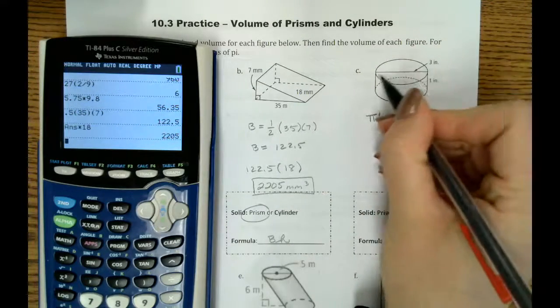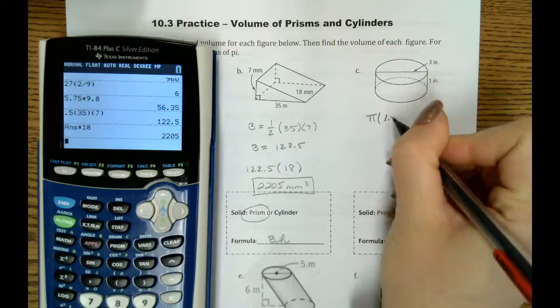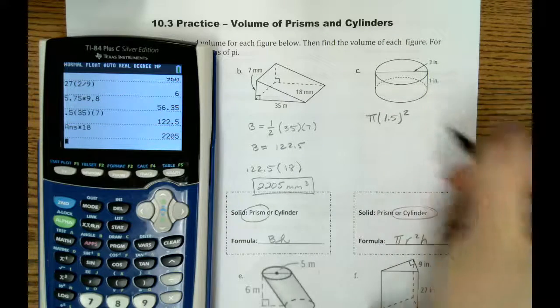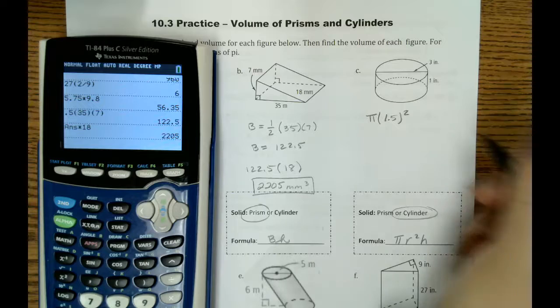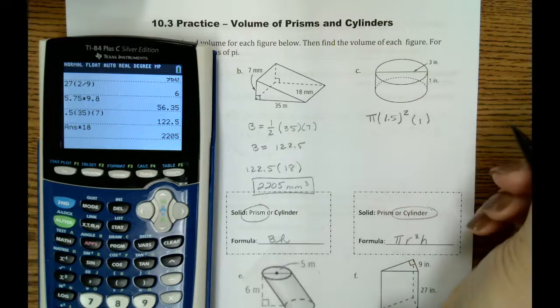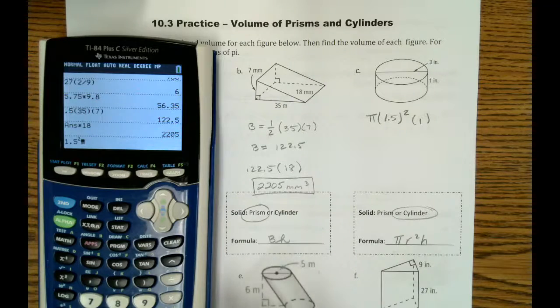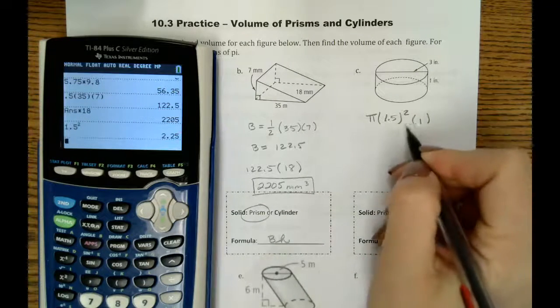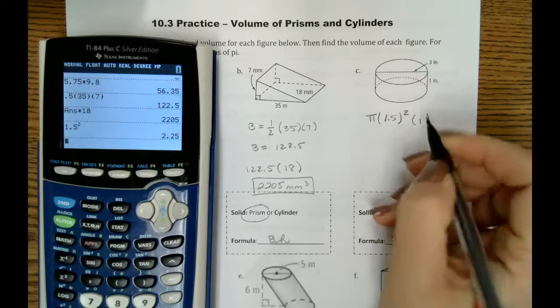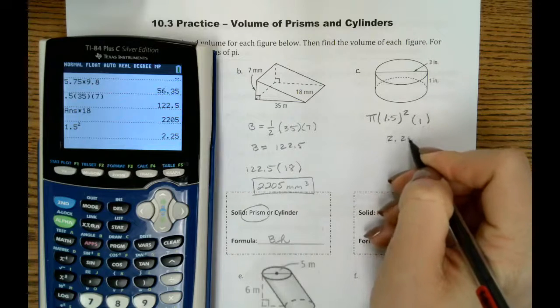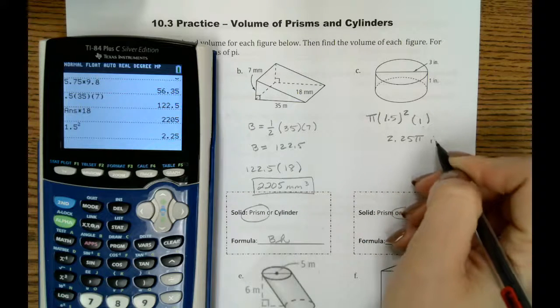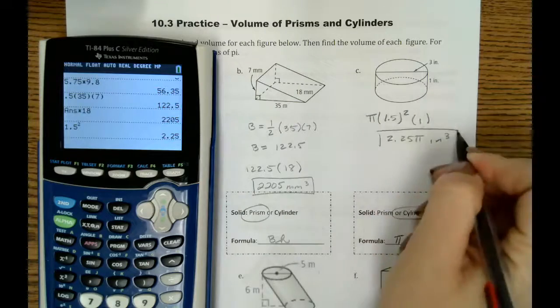Since our diameter is 3, half of it is the radius. So 1.5 would be our r times the height of 1. So since we're leaving this in terms of pi, we'll do 1.5, and then we don't really need to multiply by 1. So this is just 2.25 pi cubic inches for our volume.